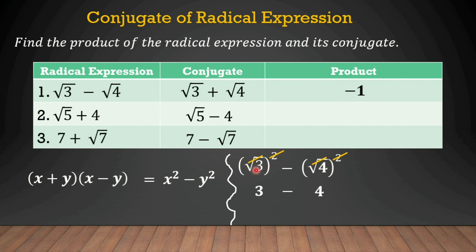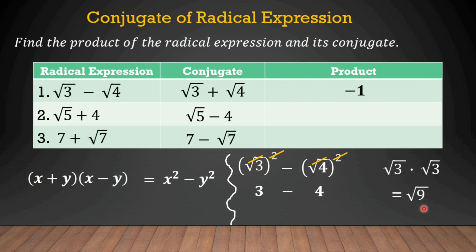Why do we do it this way? The idea is the same as the square root of 3 times the square root of 3. Their product is the square root of 9, and the square root of 9 equals 3 because 3 times 3 equals 9. So it's just that same idea, and this method makes simplification easier.